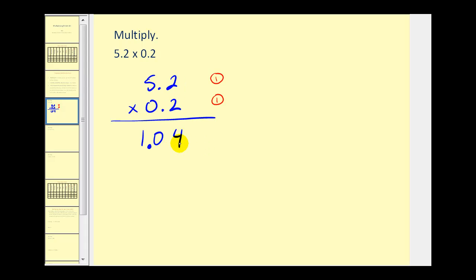Converting these to fractions might explain why this process actually works. 5.2 equals 5 and 2 tenths, which equals 52 tenths. 0.2 equals 2 tenths. So this same product in fraction form would be 52 over 10 times 2 over 10.